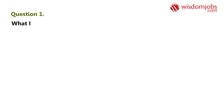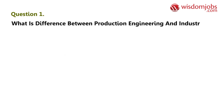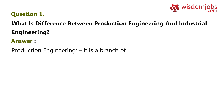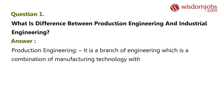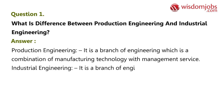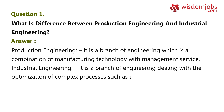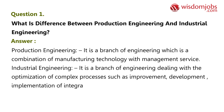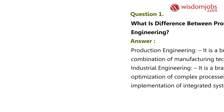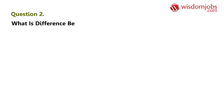Question 1: What is the difference between production engineering and industrial engineering? Production engineering is a branch of engineering which is a combination of manufacturing technology with management service. Industrial engineering is a branch of engineering dealing with the optimization of complex processes such as improvement, development, and implementation of integrated systems.